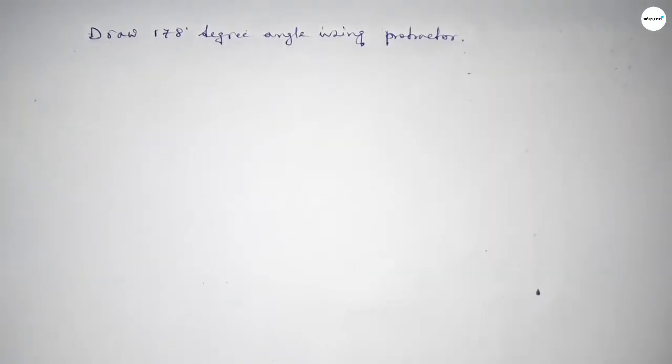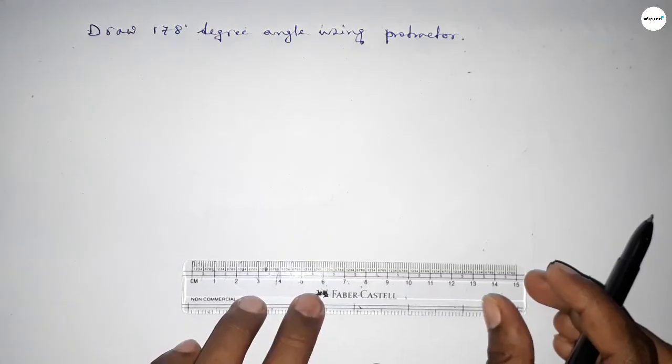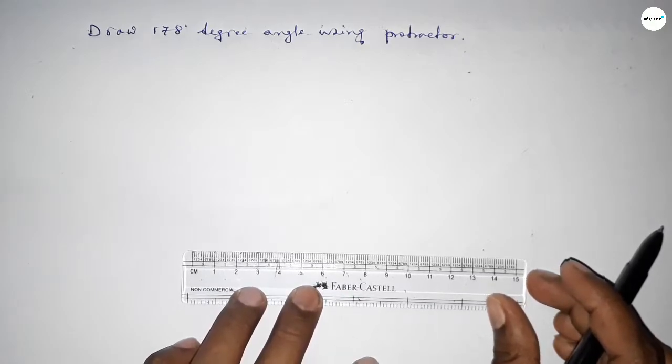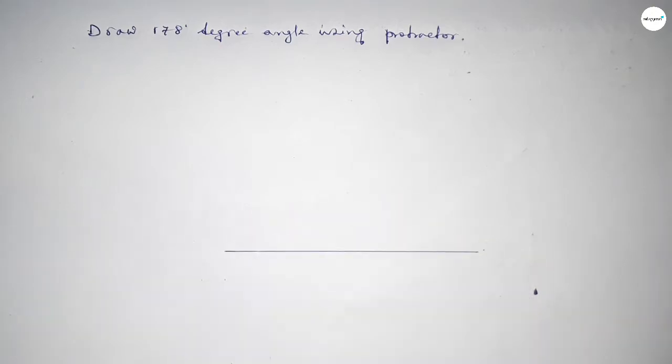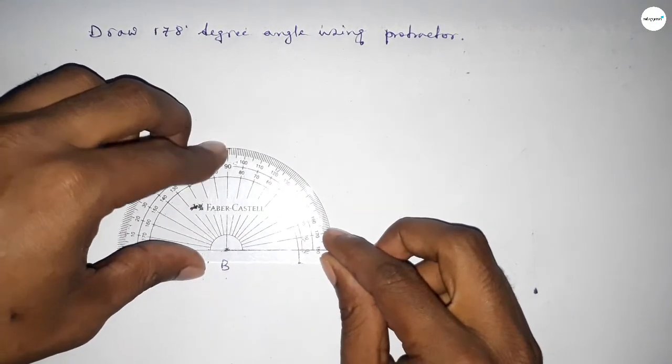First of all, we have to draw here a straight line. So first, drawing here a line, next taking here point B and here point C. Now putting the protractor on point B perfectly.